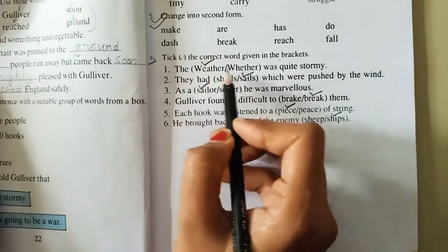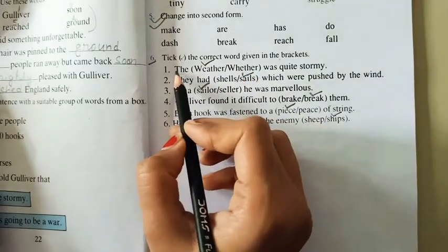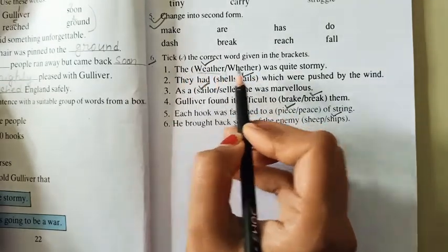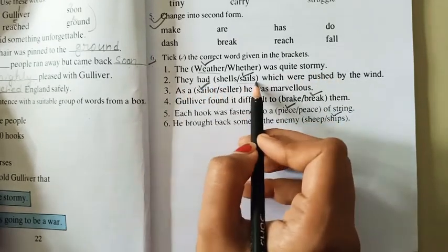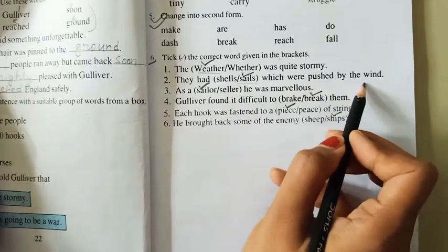You have to tick the correct option. Number 1. The weather was quite stormy. 2. They had sails which were pushed by the wind.